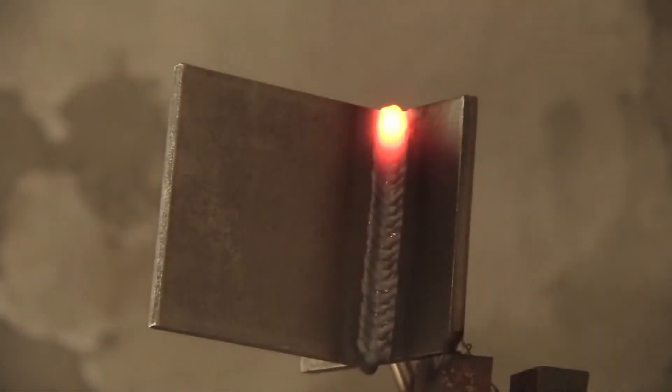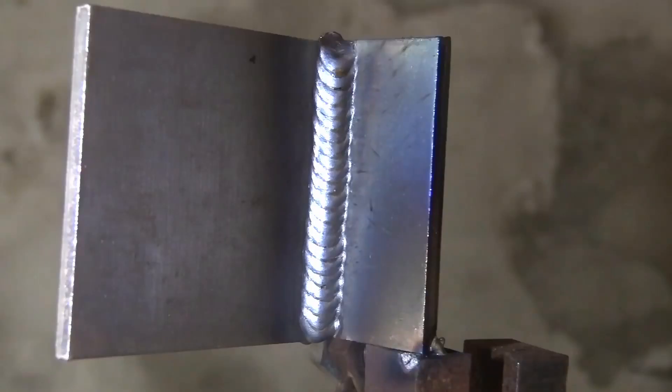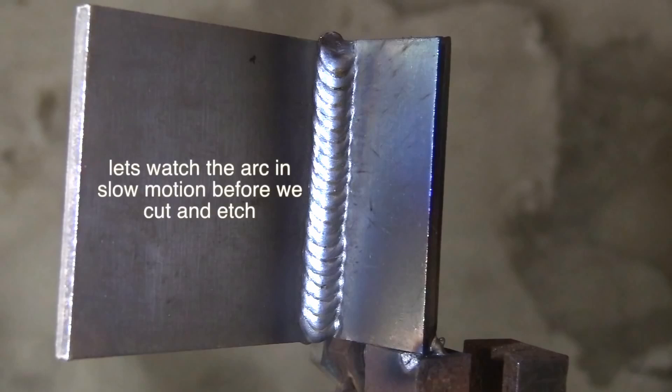Again, a nice short stick-out will always help things go better. Let's take a look at that. Now it looks pretty decent for vertical uphill, but we are going to cut and etch it and see exactly how much penetration we got. But I find it helpful to do that right after watching the arc and I want to slow the arc down here.